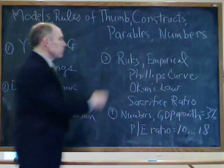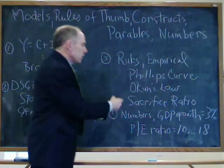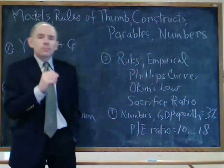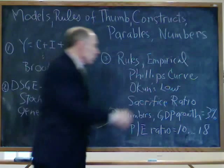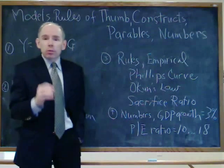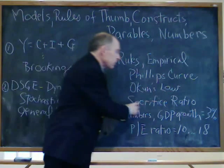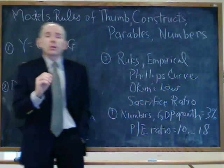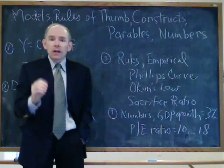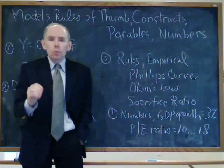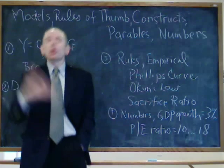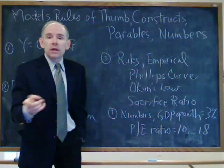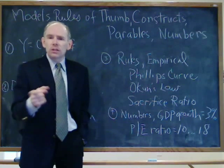Let's look at some more rules of thumb and empirical relationships. I'll put down three: the Phillips Curve, Okun's Law, and the Sacrifice Ratio. The Phillips Curve is a relationship between inflation and unemployment. Okun's Law is a relationship between unemployment and GDP growth. The Sacrifice Ratio is a quantification of the Phillips Curve — the relationship between inflation and unemployment. The Phillips Curve is very famous. It held for a long, long time. We started to work with it in the 1960s, and then it blew up — it no longer held. Some people still believe in the Phillips Curve: if the unemployment rate goes down and down and down, expect inflation to rise. Is that really a legitimate model?